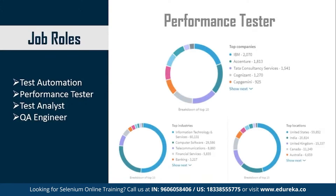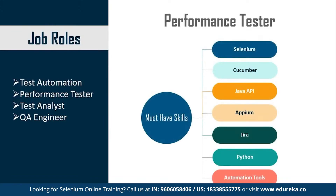Moving on, next up is the Performance Tester profile. Some of the top companies for this job role are IBM, Accenture, TCS, Cognizant, and Capgemini. The top industries for Performance Tester are IT services, computer software, telecommunications, financial services, and banking. The United States is the best preferred location for a Performance Tester, followed by India, UK, Canada, and Australia. Must-have skills include knowledge of Selenium, Cucumber, Java API, APM, Jira, Python, and proficiency with automation tools.